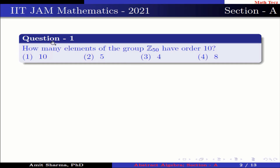Question number 1: How many elements of the group Z50 have order 10? Option 1: 10. Option 2: 5. Option 3: 4. Option 4: 8.